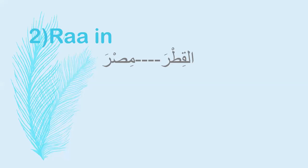Second exception: Ra in 'Al-Qitr' and 'Misr' — when we stop on these words. Ra has Sukun preceded by a letter with Kasra, making it normally light. 'Al-Qitr' is light. For 'Misr', look at the previous letter — also Kasra, so light.